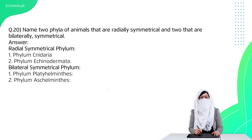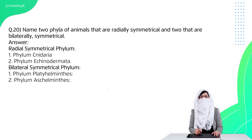Question 20 is: name two phyla with radial symmetry and two with bilateral symmetry. Radial symmetry phyla are Cnidaria and Echinodermata. Bilateral symmetry phyla are Platyhelminthes and Nematoda.